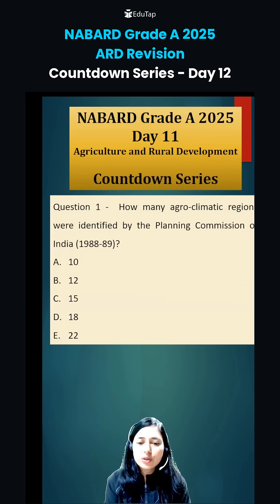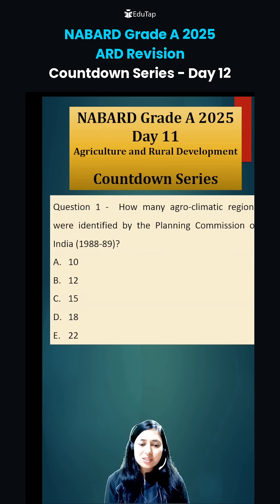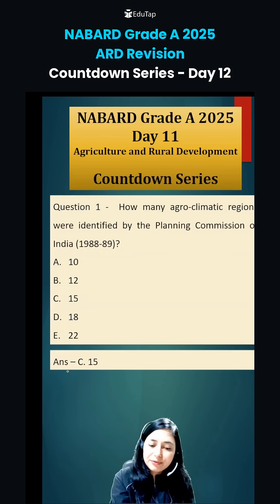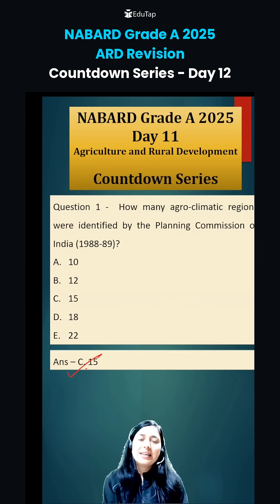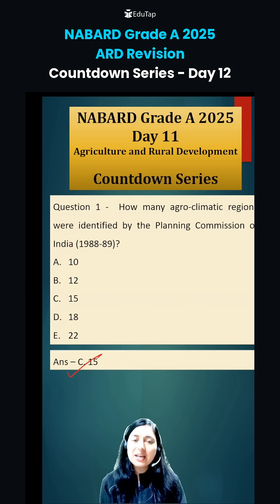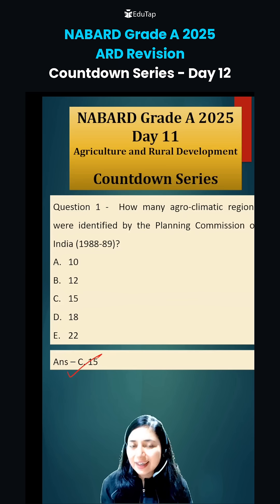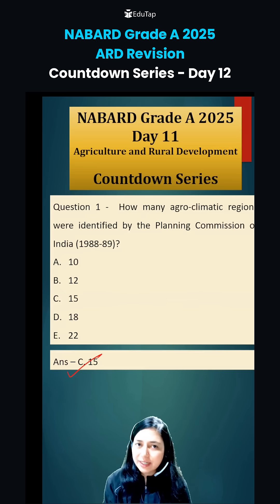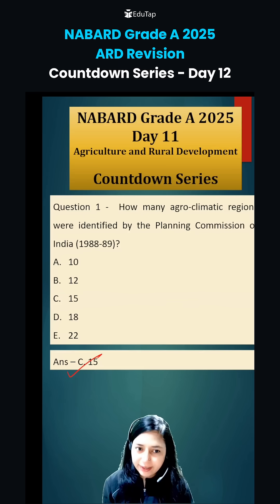The first question of Day 11 was: how many agro-climatic regions have been identified by the Planning Commission? The answer for this question is 15. Basically, to make better policies and schemes for agriculture development, the country has been divided into different agro-climatic regions based on climatic conditions. So there are 15 agro-climatic regions according to the Planning Commission of India.